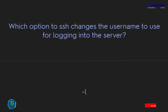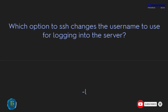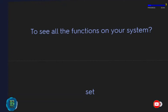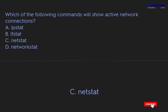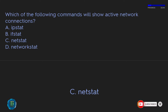Which option to SSH changes the username used for logging into the server? The -l option. To see all the functions on your system, use the set command. Which of the following commands will show active network connections? C: netstat.